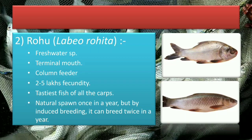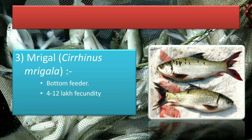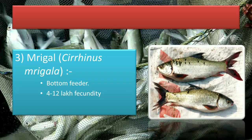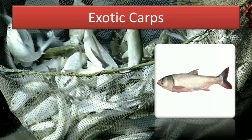Next is Mrigal. Its scientific name is Cirrhinus mrigala. It is a bottom feeder and its fecundity is 4 to 12 lakh. To clarify the word fecundity — in simple terms, fecundity means how many eggs a fish lays. This is not a scientific definition but is stated here for understanding purposes.